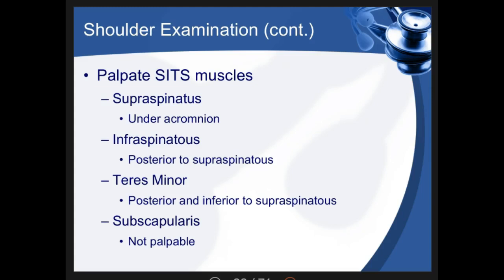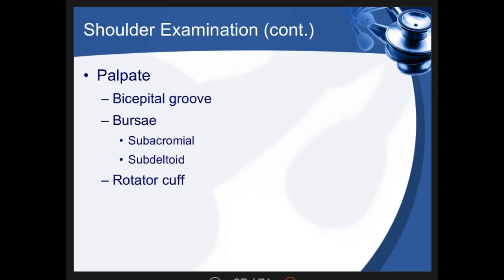Palpate the rotator cuff muscles — the supraspinatus, infraspinatus, and teres minor; the subscapularis cannot be palpated as it lies beneath the scapula. Pain in the lateral deltoid region may indicate rotator cuff strain. Also palpate the bicipital groove on the anterior shoulder, the subacromial and subdeltoid bursa, and the rotator cuff ligaments.